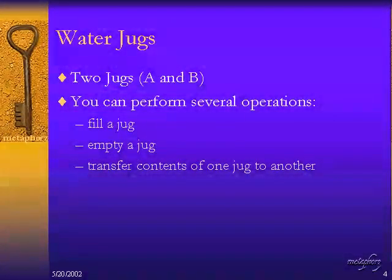Let's consider another example. We'll consider a situation where you've got two water jugs labeled A and B. And you can perform several operations on these jugs. You can fill a jug, you can empty a jug, or you can transfer the contents of one jug to the other.